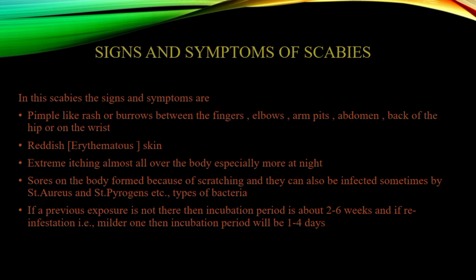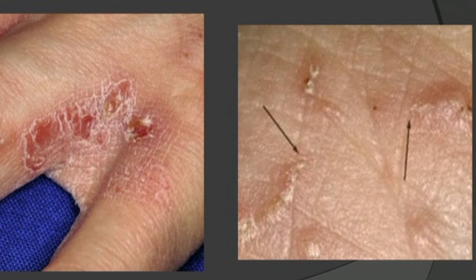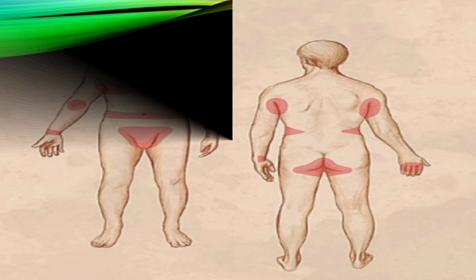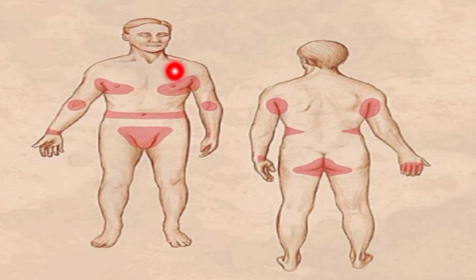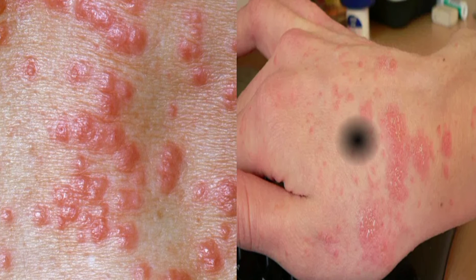These are images showing burrows forming between the fingers and bubbly-type burrows observed on the palms. This image shows the most affected areas: the wrist, extremity region, waist, back of the fingers, and buttocks region. These are some of the reddish, erythematous type of skin rashes seen in scabies.